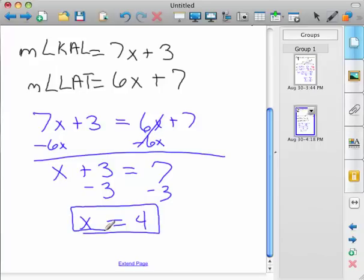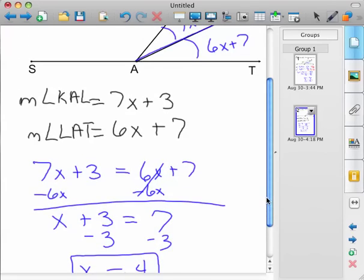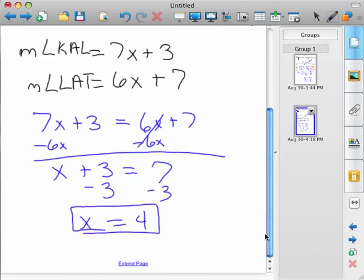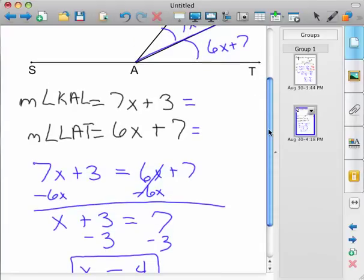However, just know that you can go beyond that. We can actually find out what angles KAL and LAT are. So if you wanted to know KAL or LAT, you just plug the 4 in for X. So 6 times 4 plus 7 - well, 6 times 4 is 24 plus 7, which is 31.